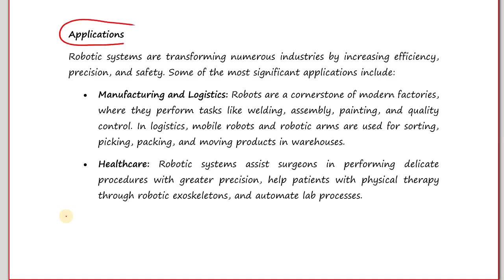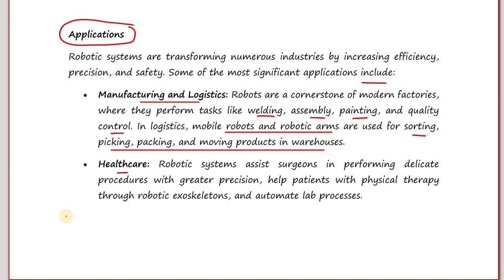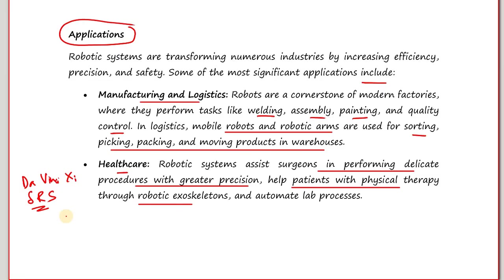Robotic systems are transforming our industries by increasing efficiency, precision and safety. In manufacturing and logistics, tasks like welding, assembly, painting and quality control can be easily managed; mobile robots and robotic arms are used for sorting, picking, packing and moving products in warehouses. In healthcare, robotic systems assist surgeons in performing delicate procedures with much greater precision — like the Da Vinci surgical robotic system — and help patients with physical therapy through robotic exoskeletons and automate lab processes.